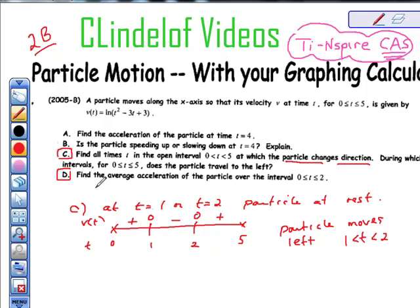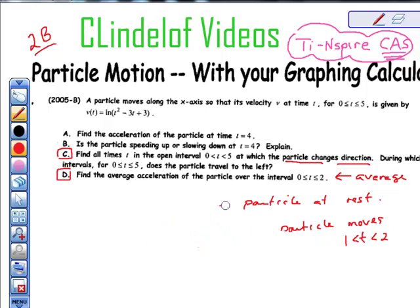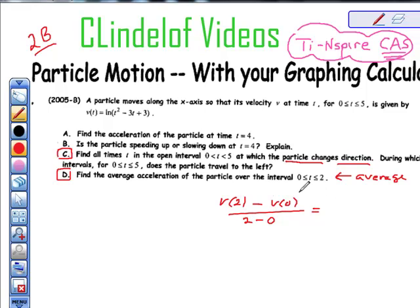Finally, it says find the average acceleration of the particle on the interval. So this is an average rate of change function. Now that we're doing letter D, what they're kind of hoping that you're going to do is they're hoping that you're going to do v of 2 minus v of 0 over 2 minus 0 equals some number. But that's not true. What they're afraid you're going to do was do a of 2 minus a of 0 to find average velocity. That's to find average acceleration. That's not true.